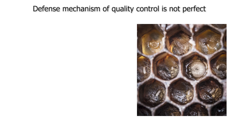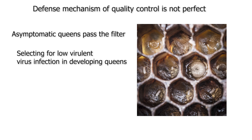However, this defense mechanism is not perfect. A queen with an asymptomatic infection will pass this filter, selecting for low-virulent virus infections in developing queens. This could be a direct reason why viruses are detected so sporadically in the different stages of queen development or in newly emerged queens.